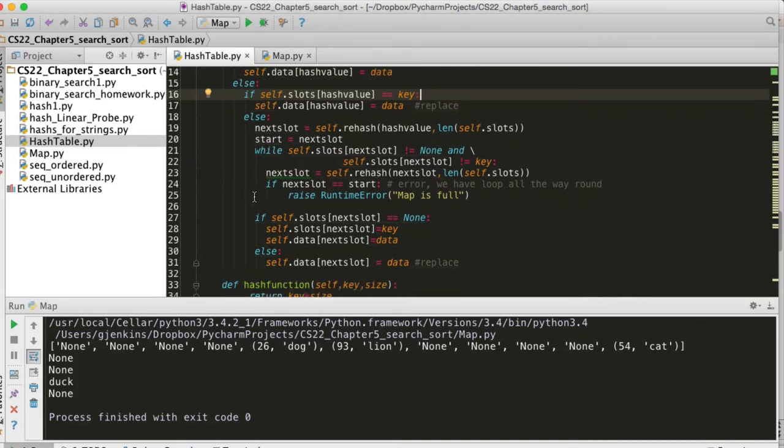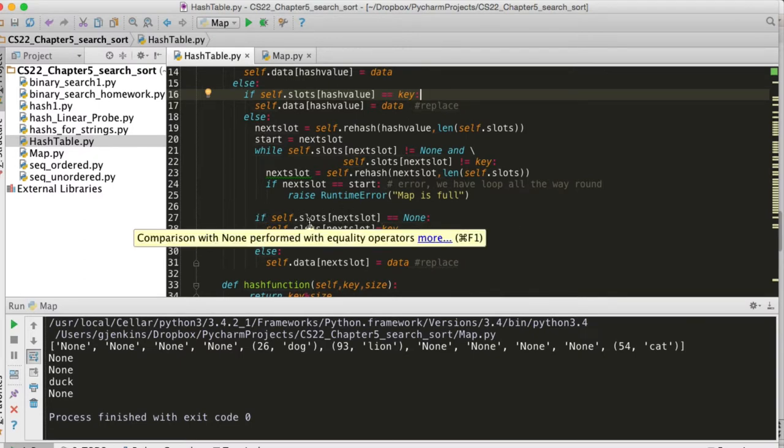Okay, so once the while successfully completes, it gets down here, it's found an empty slot. So it's found a slot that has caused the loop to stop, which means either it's not equal to the key, so it's going to stop if it's equal to the key or it's equal to none. So it checks here why did it stop.